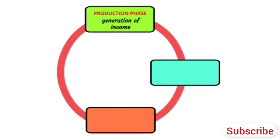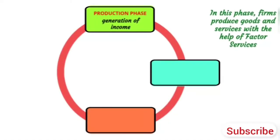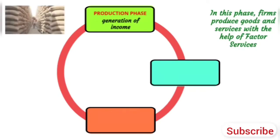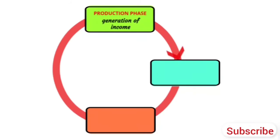Production Phase: In this phase, firms produce goods and services with the help of factor services, which includes land, labor, capital, and enterprise.